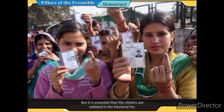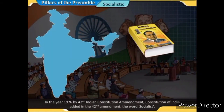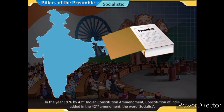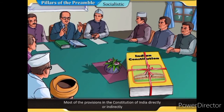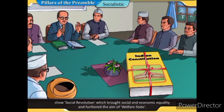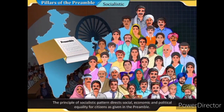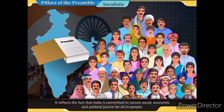Citizens must be enlisted in the electoral list. Regarding socialism: in 1976, by the 42nd Constitutional Amendment, the word 'socialist' was added to the Constitution of India. Most of its provisions directly or indirectly show social revolution, bringing social and economic equality and furthering the aim of a welfare state. The principle of the socialistic pattern directs social, economic, and political equality for citizens as given in the preamble, now regarded as a prime feature of the state.